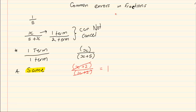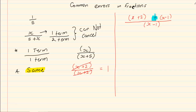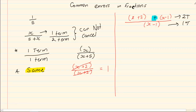Let's take the following example: x plus 2 plus x minus 1, all over x minus 1. Even though it looks like you can cancel the x minus 1 with the x minus 1, because of this plus sign you cannot cancel. There are two terms on the top and there is one term at the bottom, so you cannot cancel.